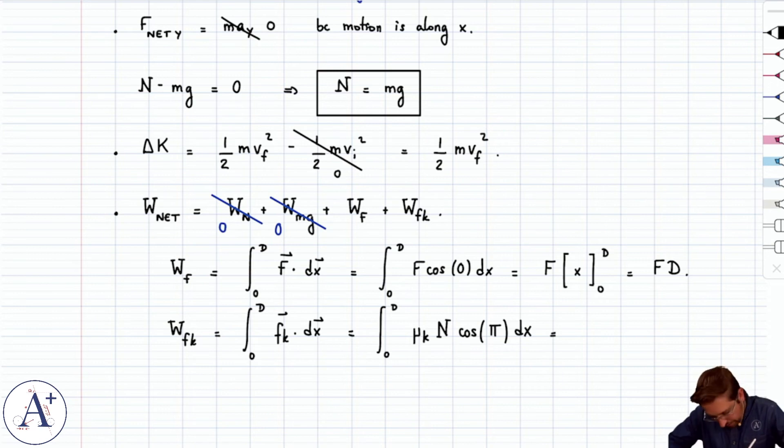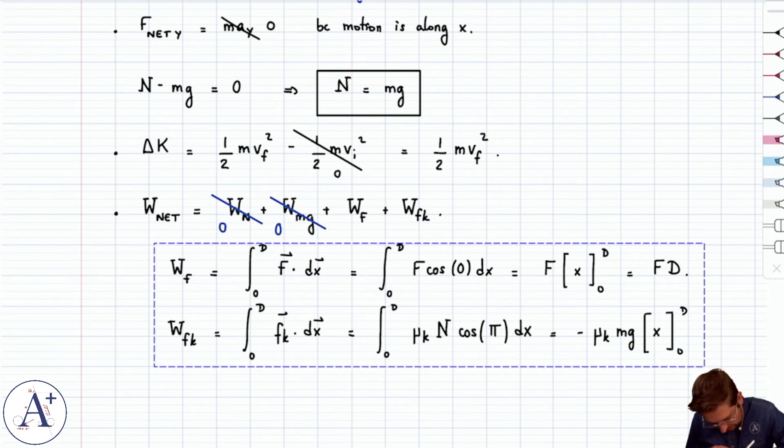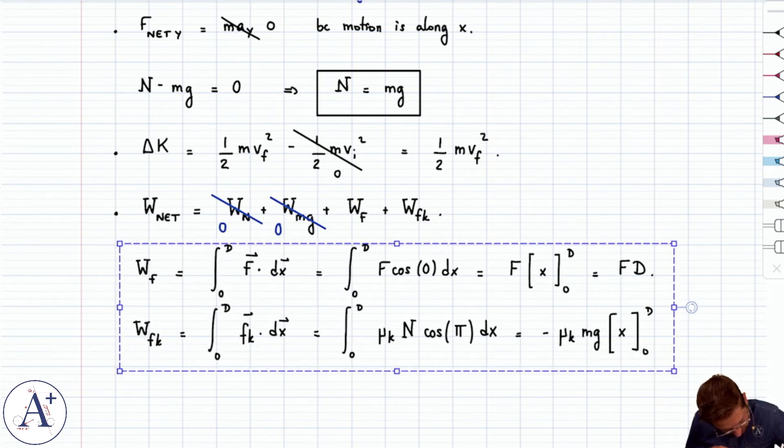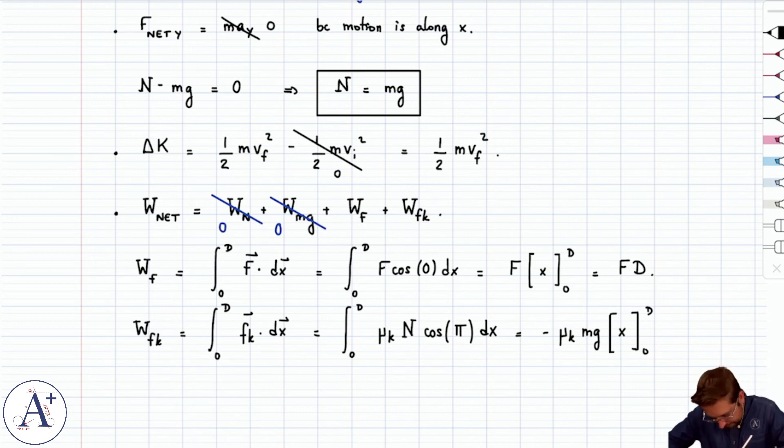Cosine pi is minus one, n is mg. So I get, coming out of the integral, minus mu k mg, because all those things are constant. Integrate x between zero and D. And I get minus mu k mgd. So let me reorganize this real quick. Here we get minus mu k mgd. All right.